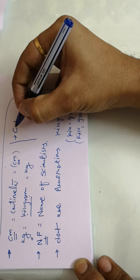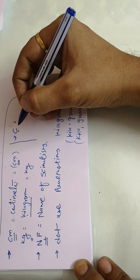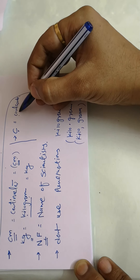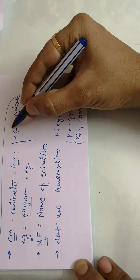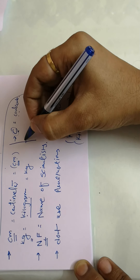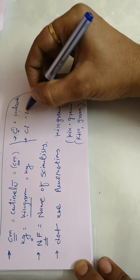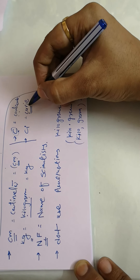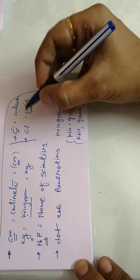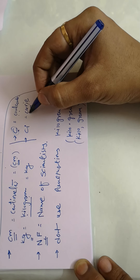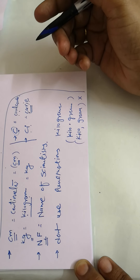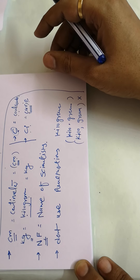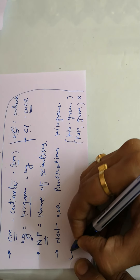For example, capital 'C' is the name of the scientist Coulomb. In his memory, we use capital C for the unit of electric charge. But there is another scientist, Madam Curie, who invented a radioactive element — her unit is 'Ci' (curie), also starting with C. So when two scientists share the same starting letter, we use the second alphabet of their name to distinguish them.